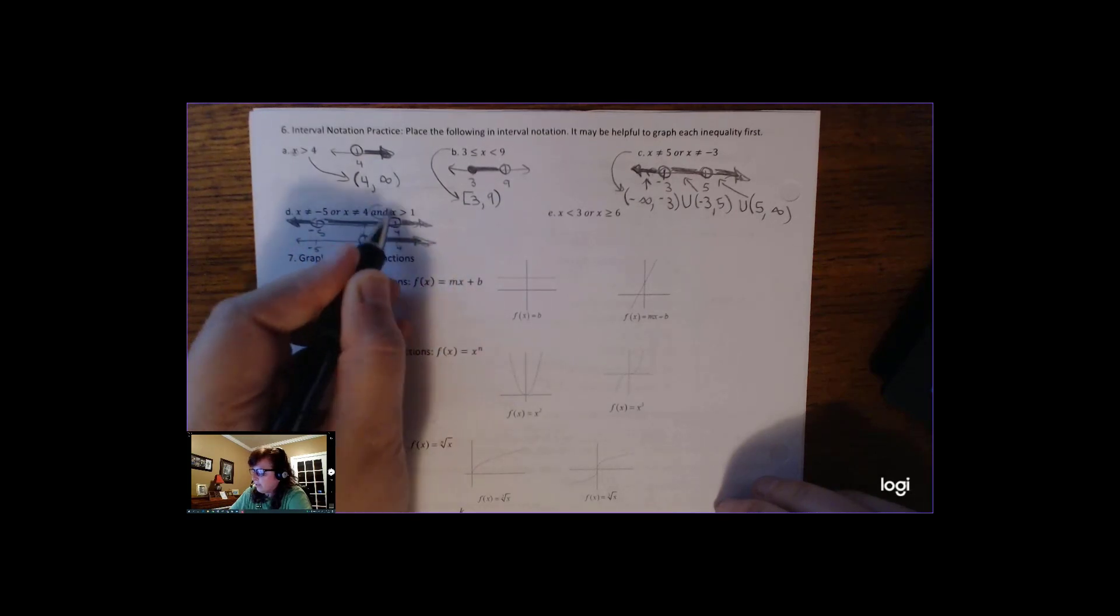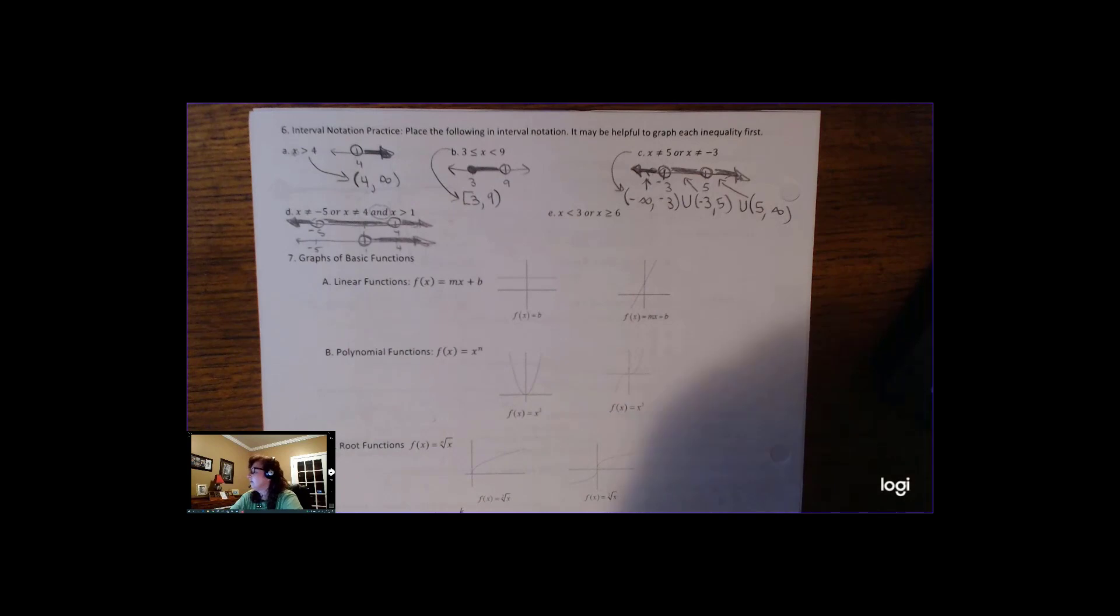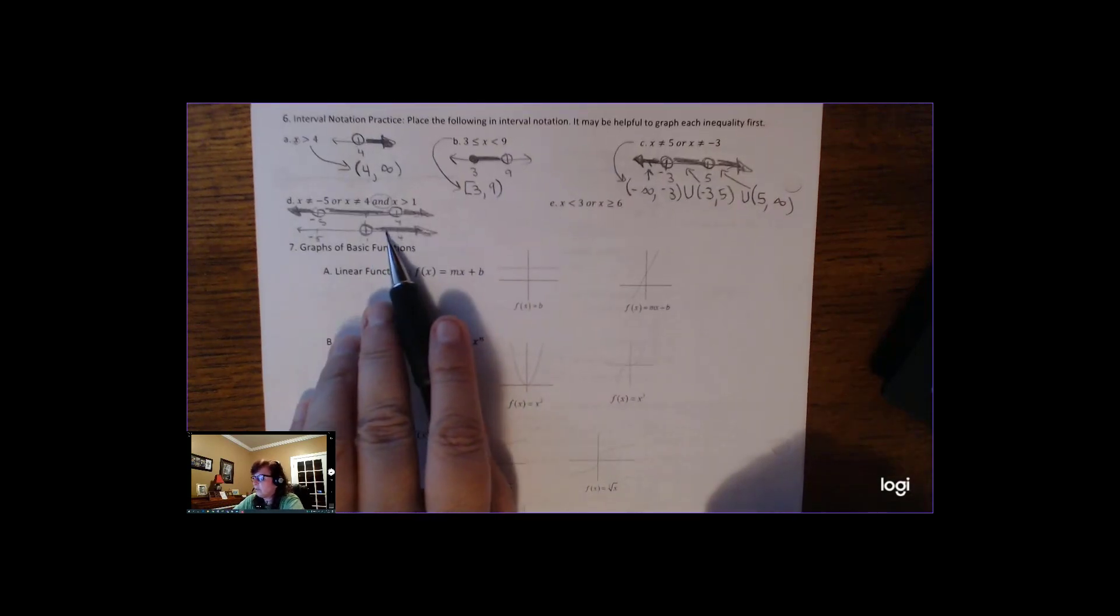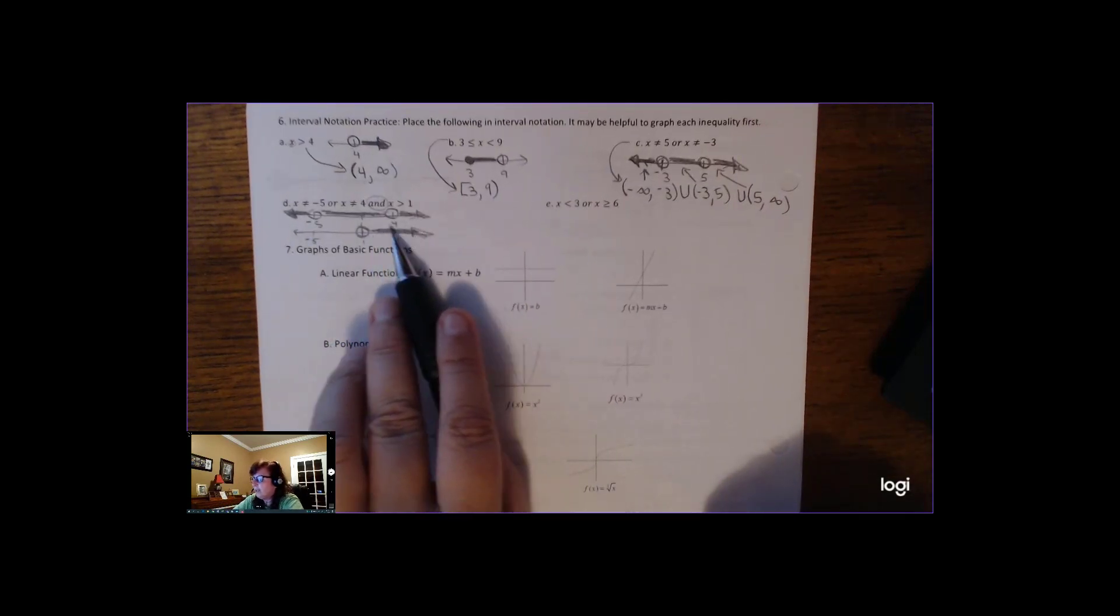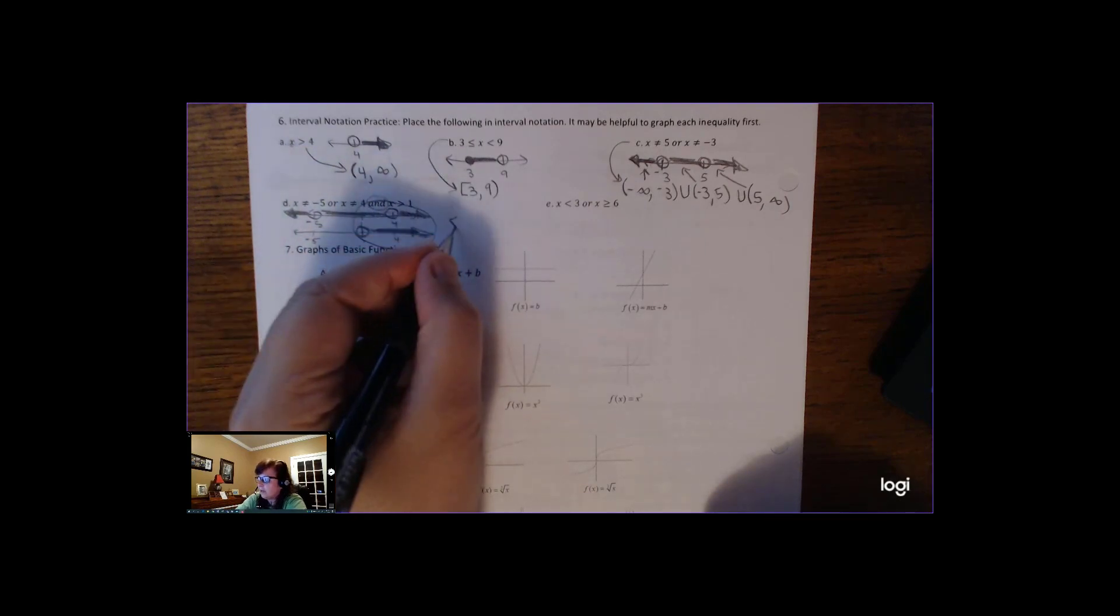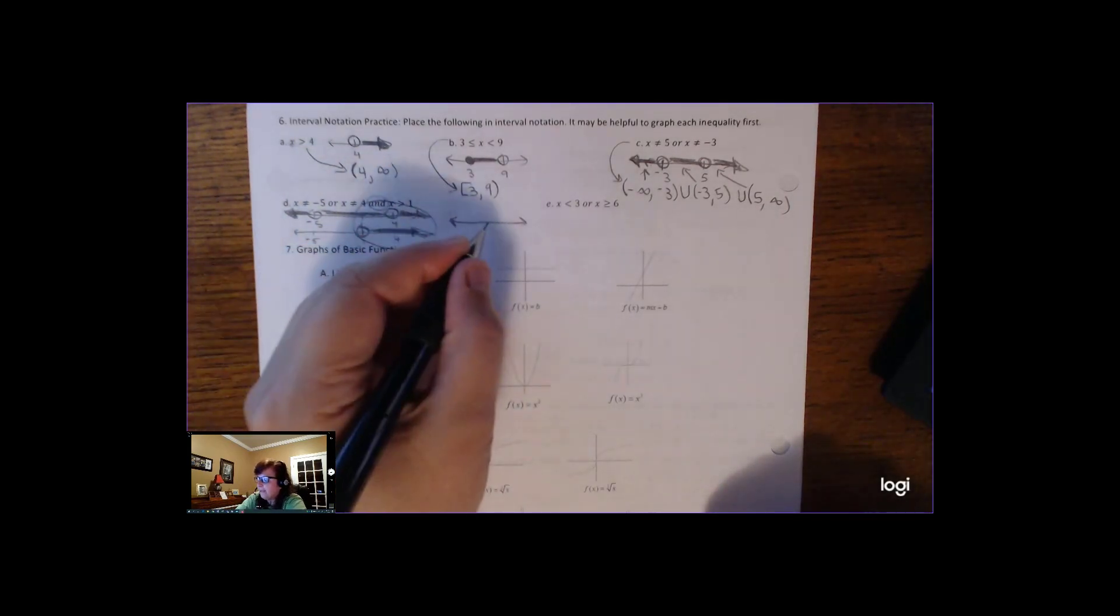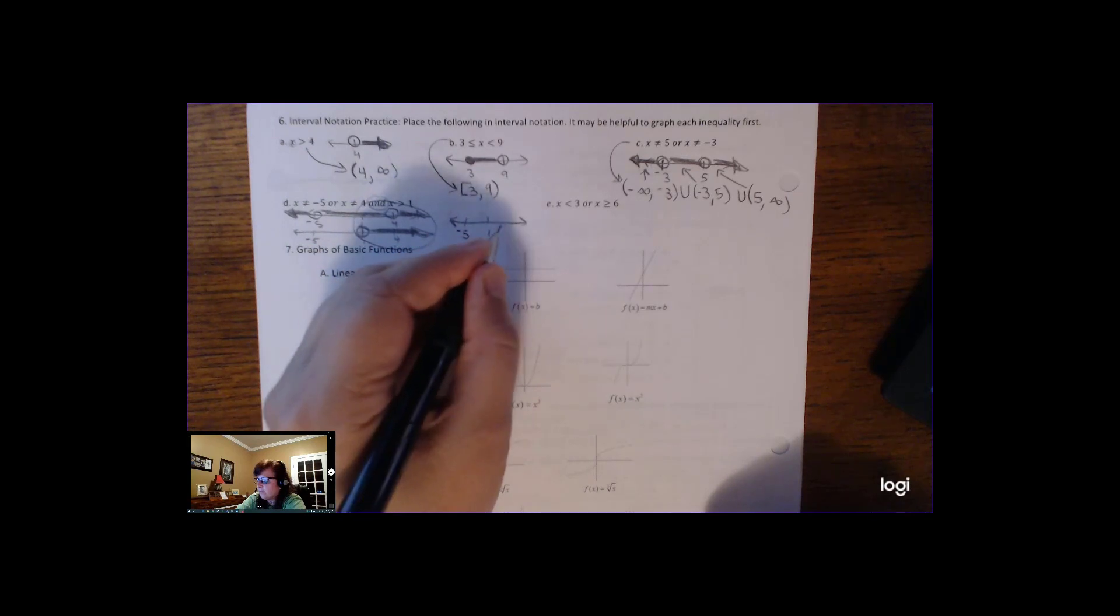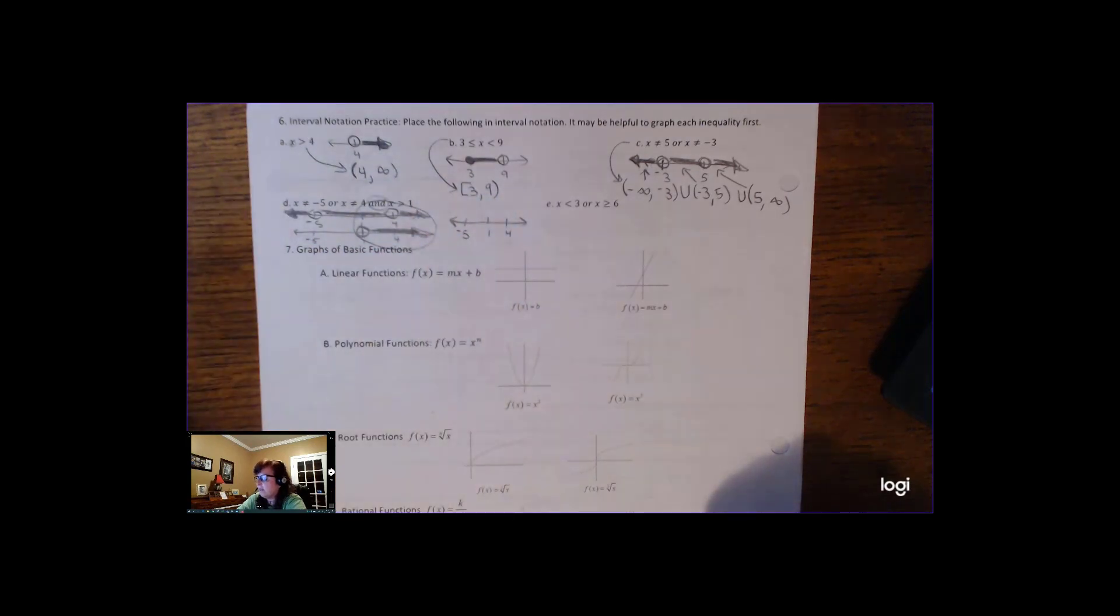Now, because it says and, I only want the places where both of these statements are true. And the only place that both statements are true, it has to be greater than 1, and it can't be negative 5 or 4. So if we put both of these together, this right here is where it's true. So I'll do one final number line. And the reason that you have to do this is because some of this information kind of falls away as unimportant.